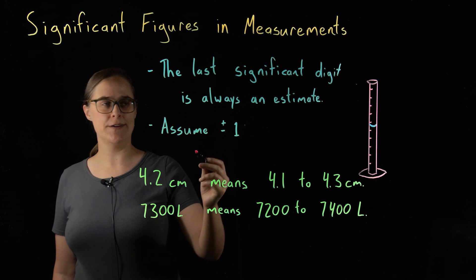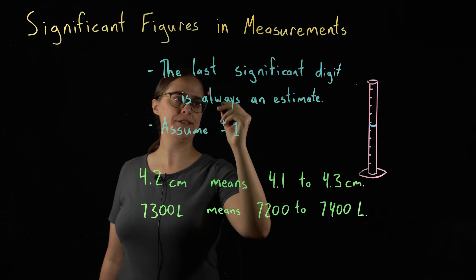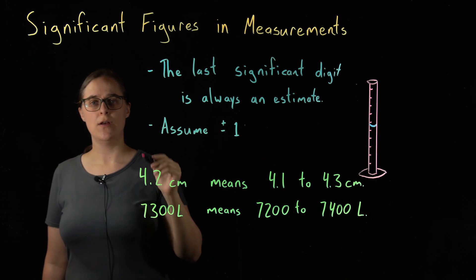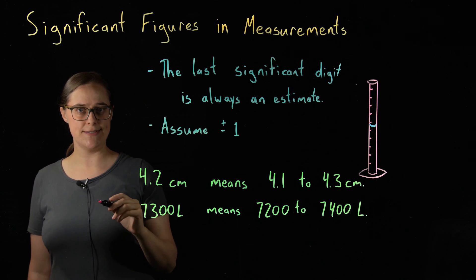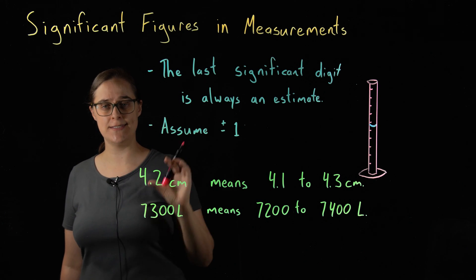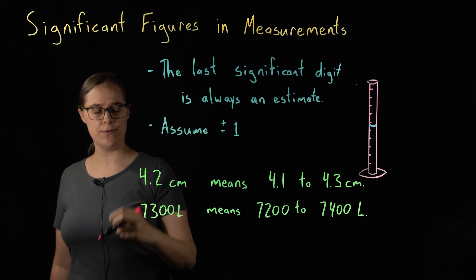This is what our two rules have in common. The last significant digit is always an estimate. Always assume that the last significant digit is plus or minus 1, unless specified otherwise. Here are two examples.